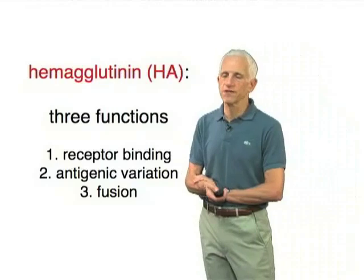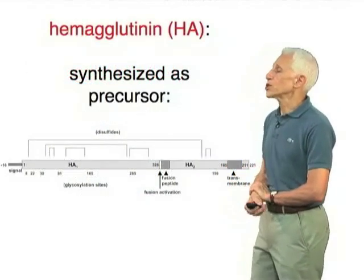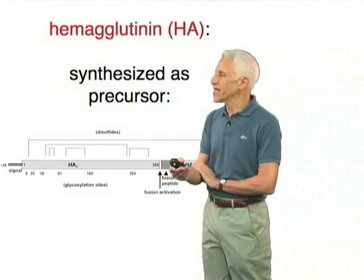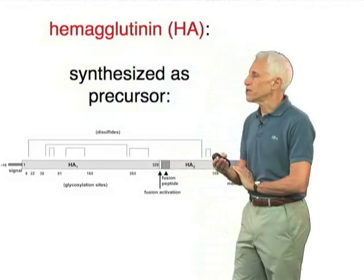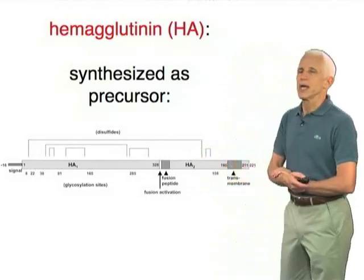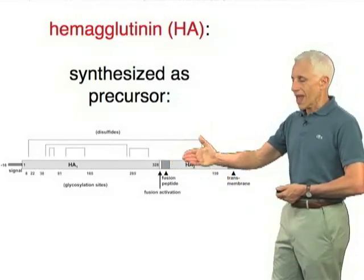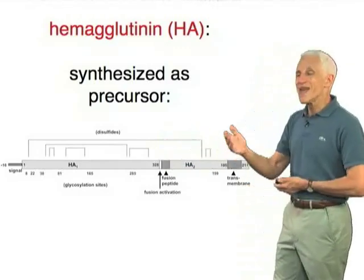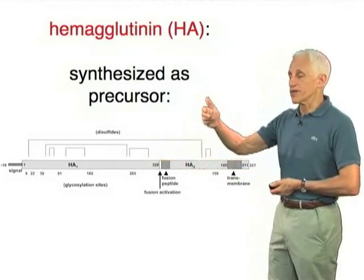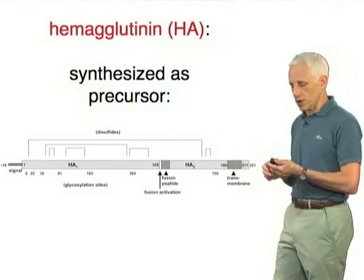Finally, it is the protein that catalyzes the membrane fusion process when suitably triggered by proton binding. It's synthesized as a precursor — the precursor is called HA0, and the two fragments are known as HA1 and HA2. At the N-terminus of HA2 is a hydrophobic peptide, made terminal rather than internal by the cleavage process, that interacts with the target cell membrane and is known as the fusion peptide. There is also a transmembrane segment near the C-terminus that anchors the protein in the viral membrane.